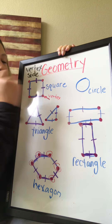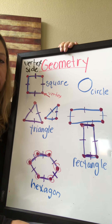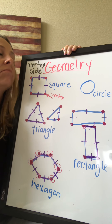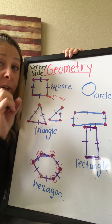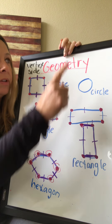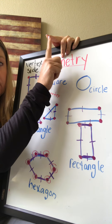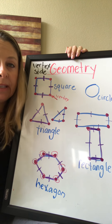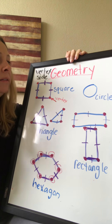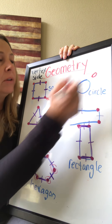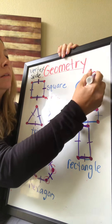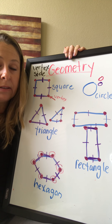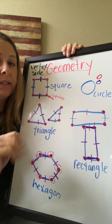Now let's take a look at the circle. The circle is interesting — do you see any straight lines on it? Nope, zero. And do you see any corners where the two sides meet at a point? Nope. So circles have zero vertices and zero sides because there are no straight lines and no corners or points on a circle.